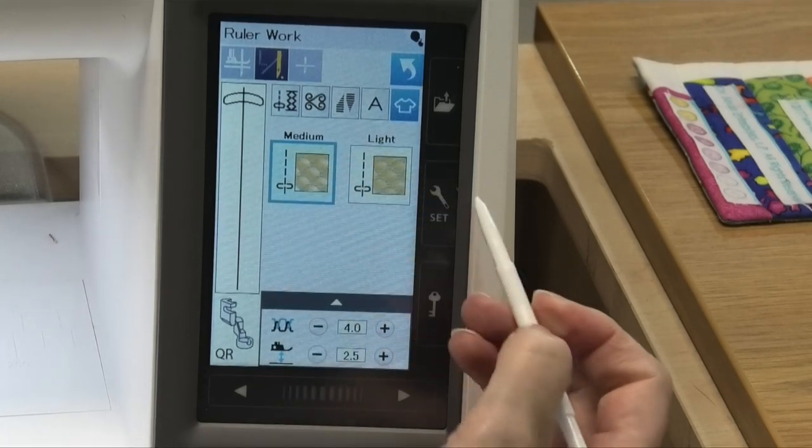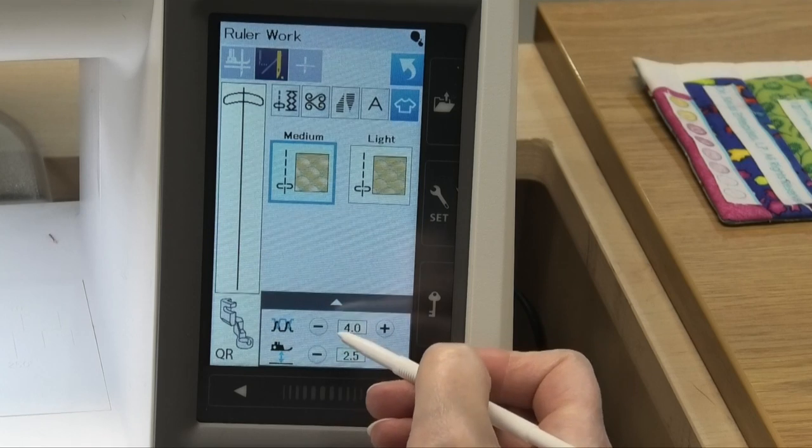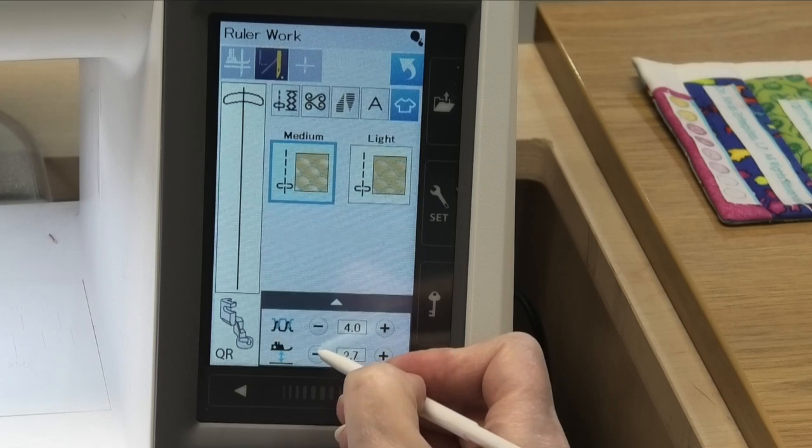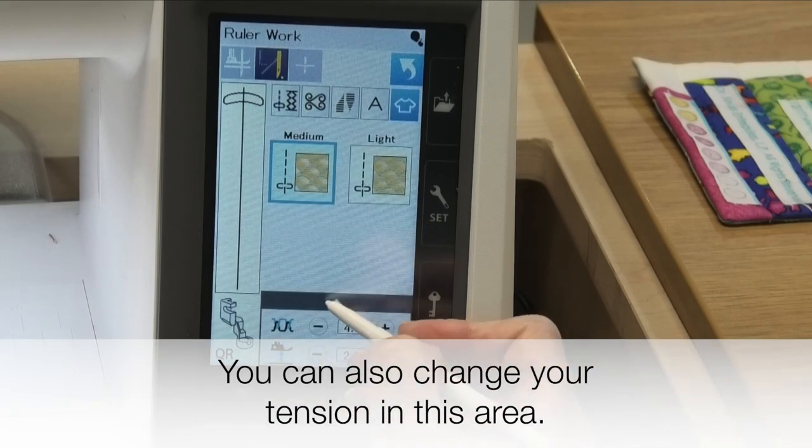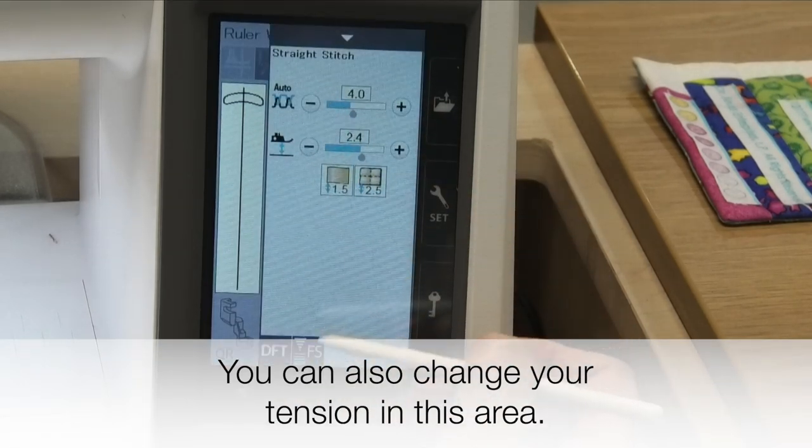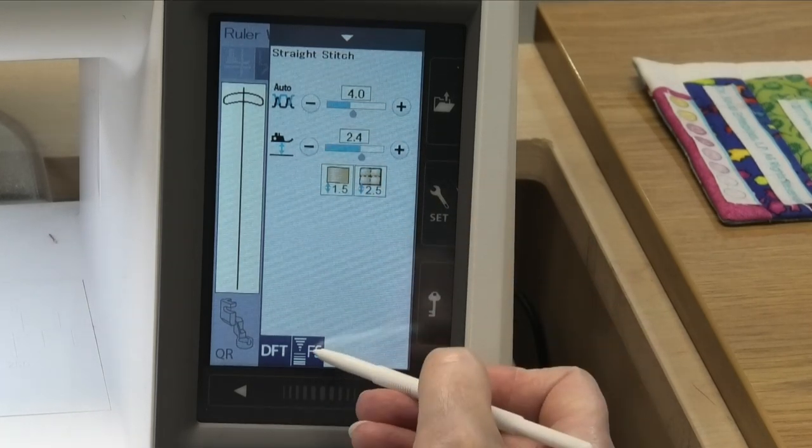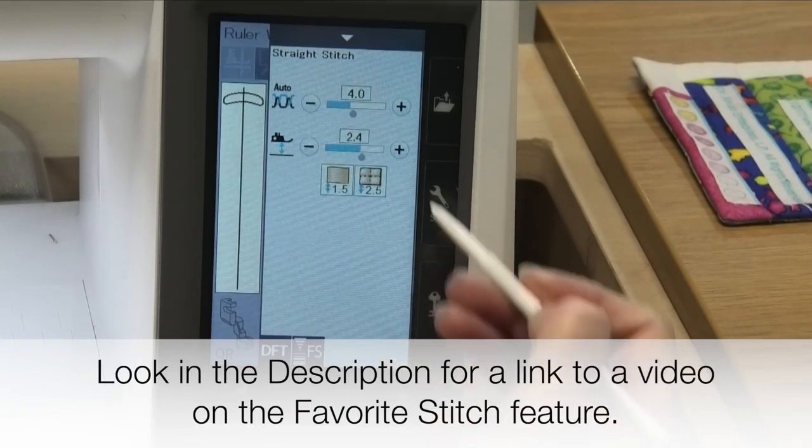So most the time probably in the medium but if you do find that that's working but not quite as well as you'd like you can make your adjustments here or you can make your adjustments in here. You'll also notice that you have the opportunity once you've made those changes to save it as a favorite stitch should you want to do that.